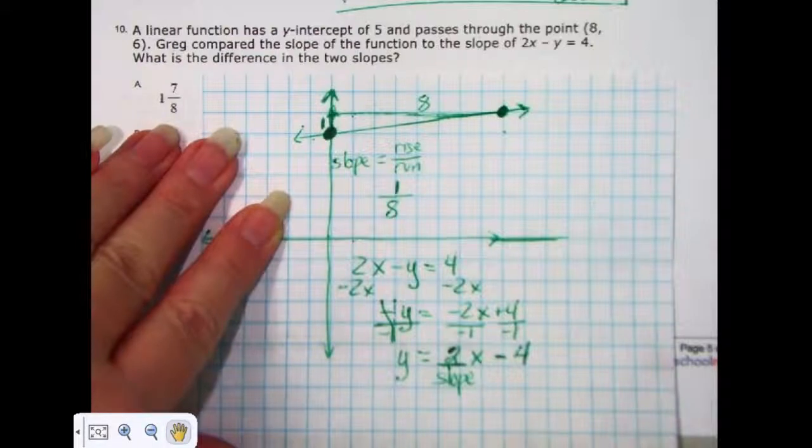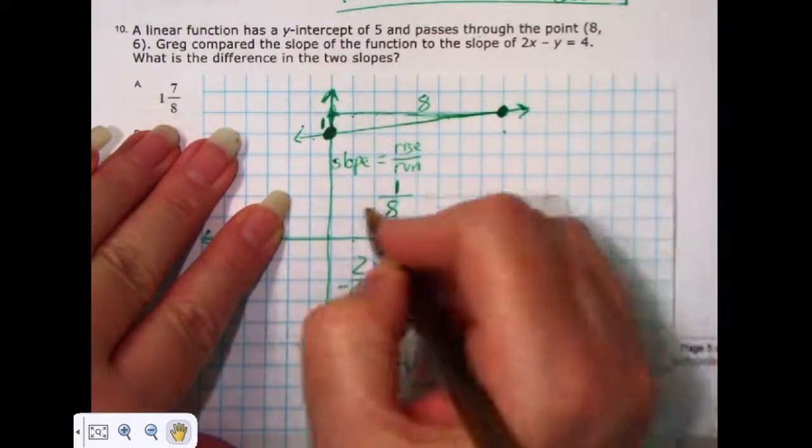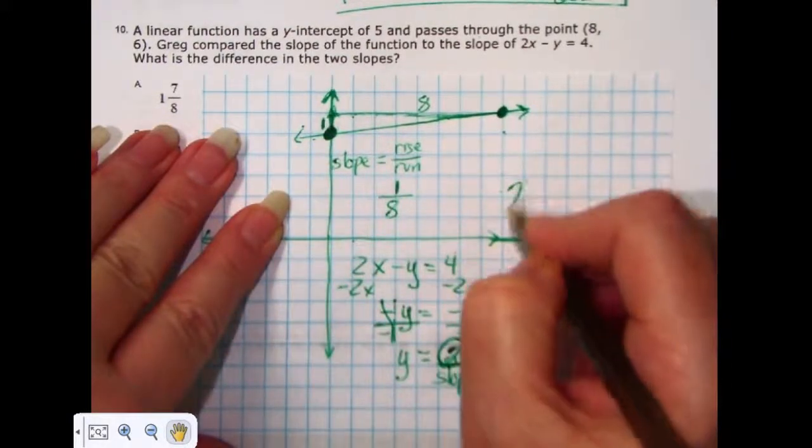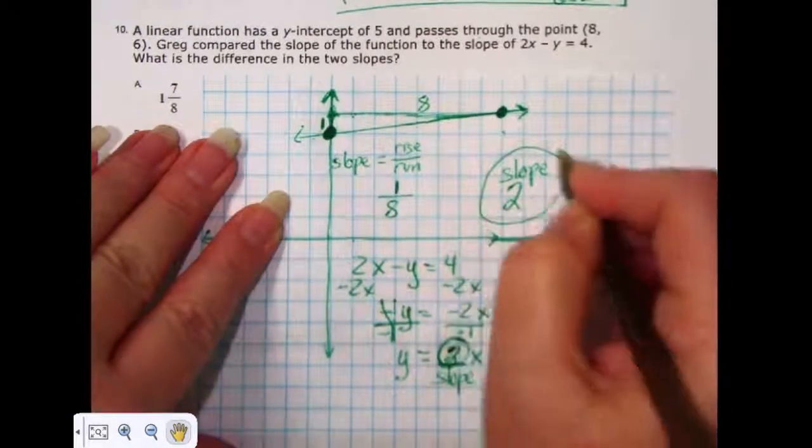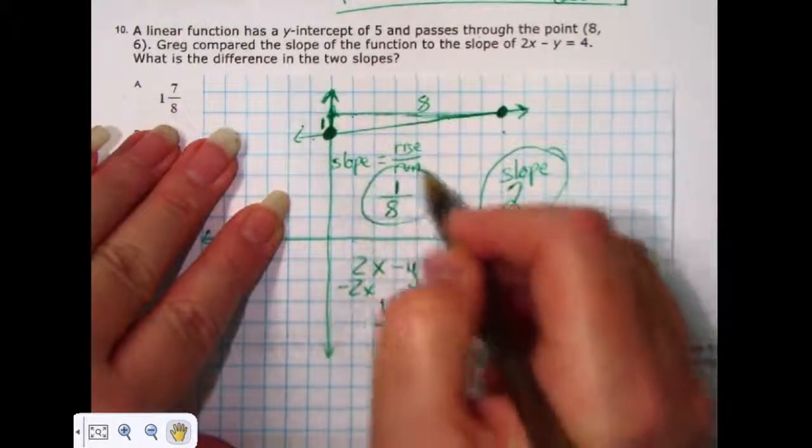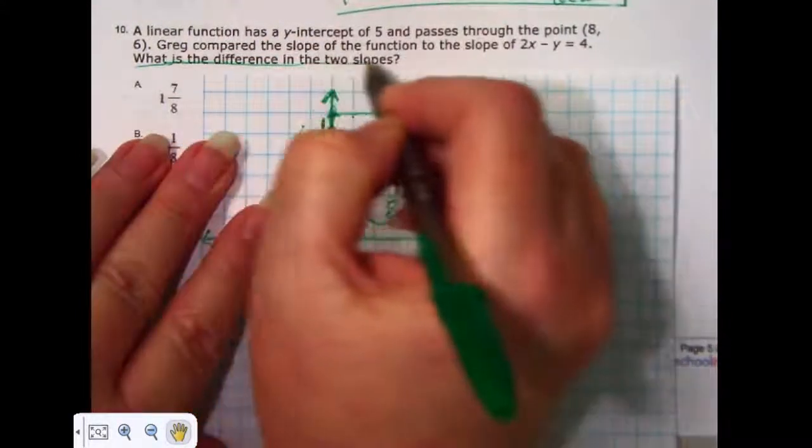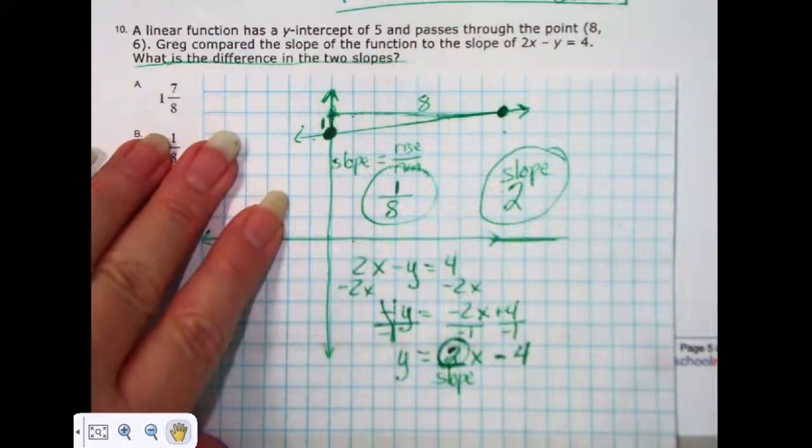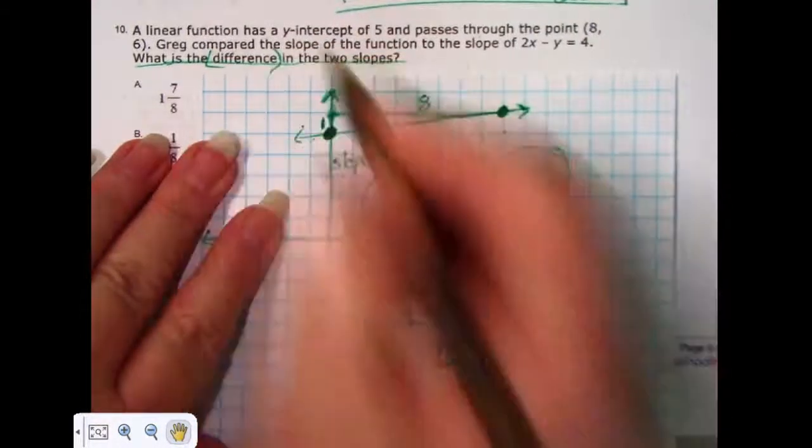So, just by solving this equation and looking at this value, then I can see that the slope of the second function is 2. The slope of the second function is 2. The slope of the first function was 1/8. The question asks, what is the difference in the two slopes? The word difference means that I'm going to subtract.